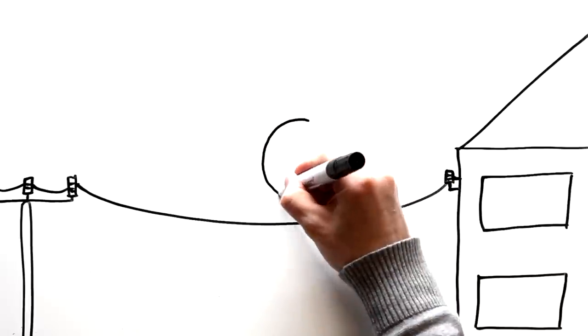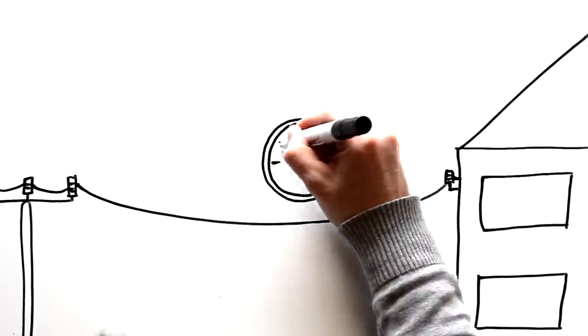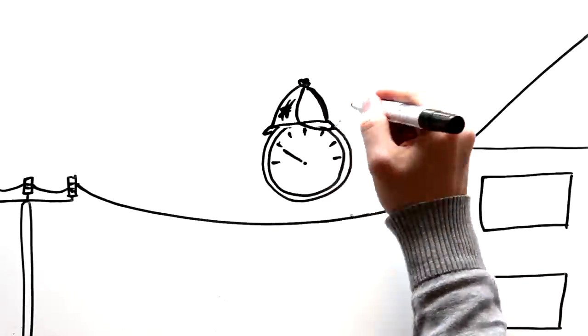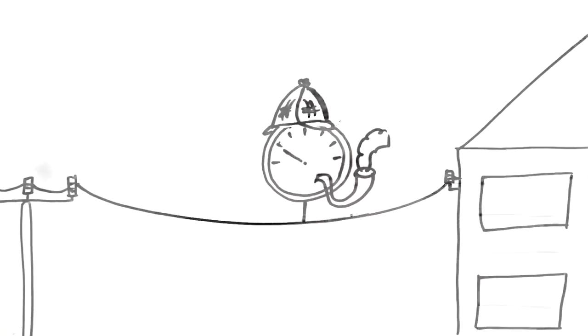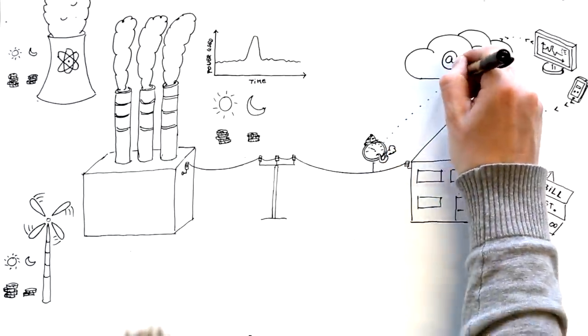This will all change by the year 2020, as the UK government rolls out smart meters. Like your personal electricity monitor, smart meters will always be connected to the internet.